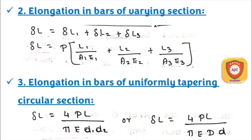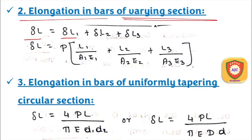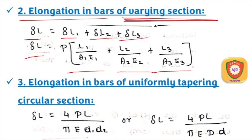For bars with varying sections, the elongation formula is δl = δl₁ + δl₂ + δl₃, which equals P multiplied by [L1/(A1·E1) + L2/(A2·E2) + L3/(A3·E3)]. This is the elongation formula for a bar over varying sections.